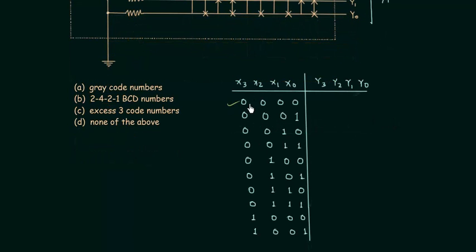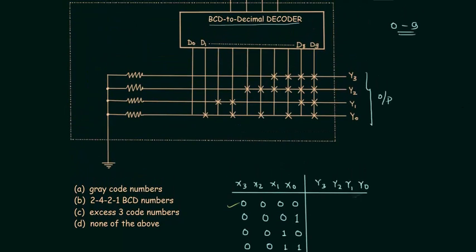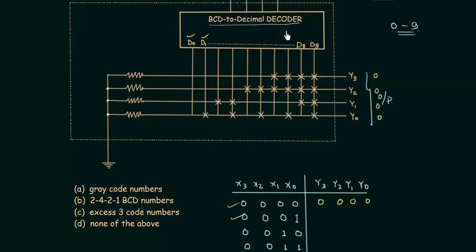In the first case when all four inputs equal 0, D0 is the output of the decoder. D0 is not connected to any of the outputs, so y3=0, y2=0, y1=0, y0=0. In the second case x3, x2, x1 are 0 but x0=1, so D1 is the decoder output. D1 is connected to y0, so y0=1 and all other three outputs equal 0.